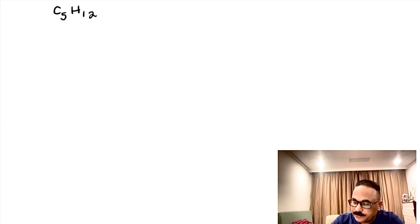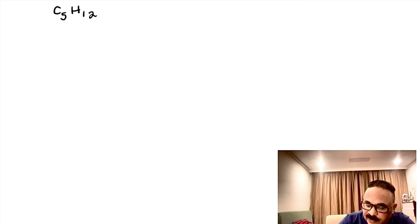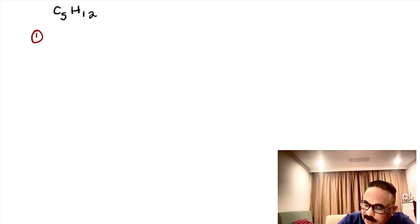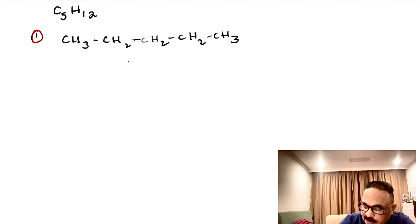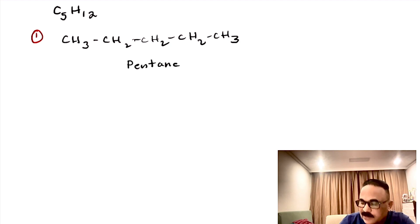Now let us do another example. This example is C5H12. Let us draw a condensed structure, so it will be faster. The first one: CH3–CH2–CH2–CH2–CH3, with 5 carbons in a straight chain. Let us name it as pentane. This is number 1.